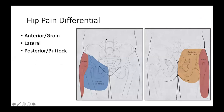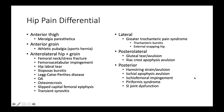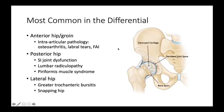When evaluating hip pain, the differential can be broad. Have the patient point with one finger to where their pain is most, and determine if it is anterior, lateral, or posterior. Anterior hip pain in the groin often comes from the joint itself — arthritis in older patients, or labral tears and femoroacetabular impingement in younger patients. Posterior hip pain can be from sacroiliac joint dysfunction, lumbar radiculopathy, or piriformis syndrome. Lateral hip pain can be from the greater trochanteric bursa or snapping hip syndrome.